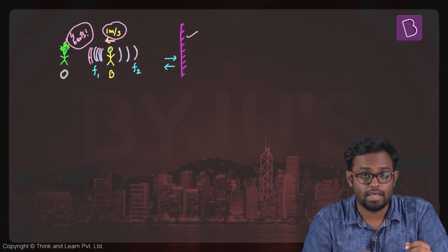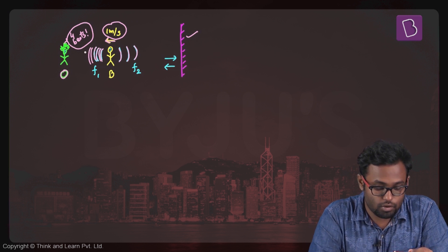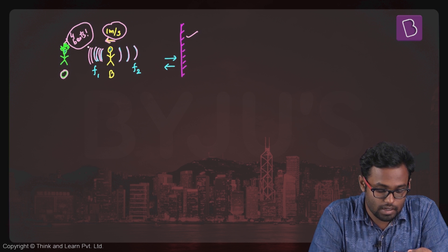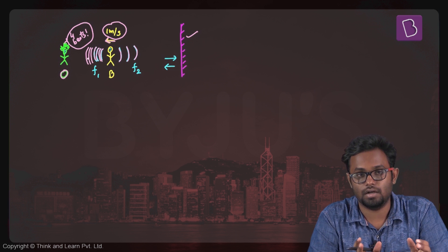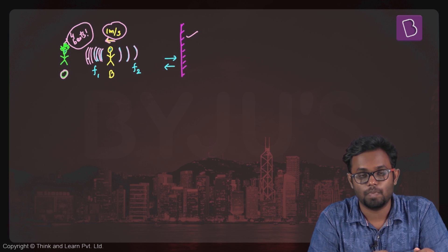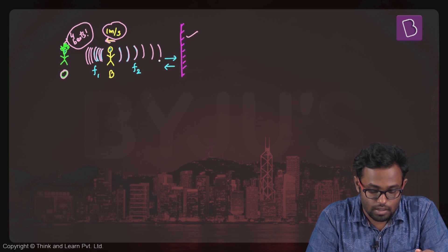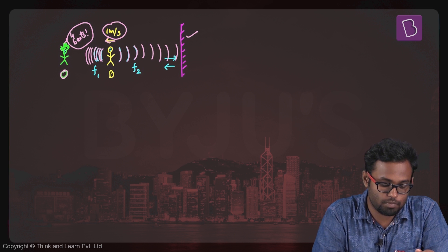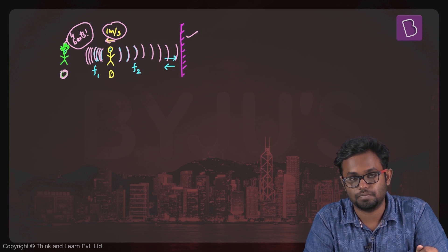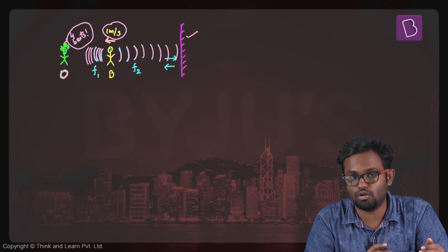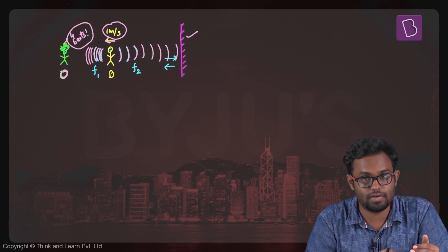He'll hear four beats per second because he's receiving the frequency directly from the person who is walking, the whistler, as well as the frequency which is reflecting from the wall and coming back to this observer. So we just have to find what those frequencies are, take their difference, and that will be equal to four.